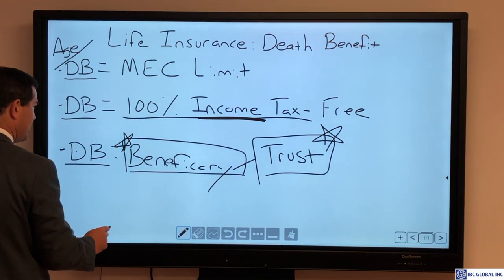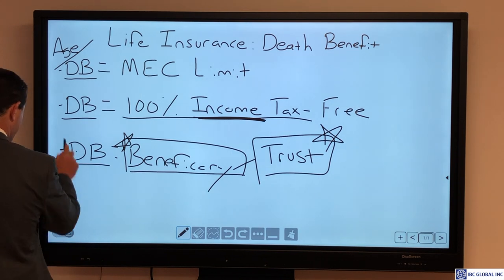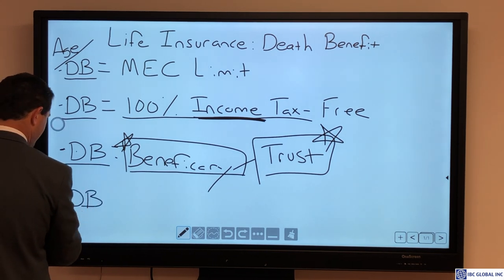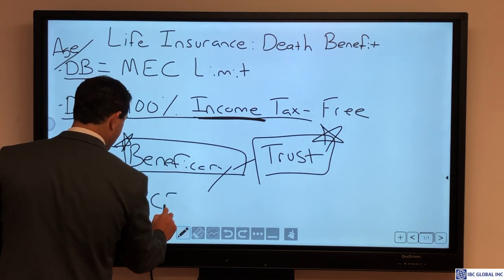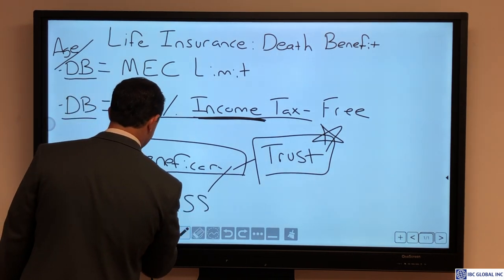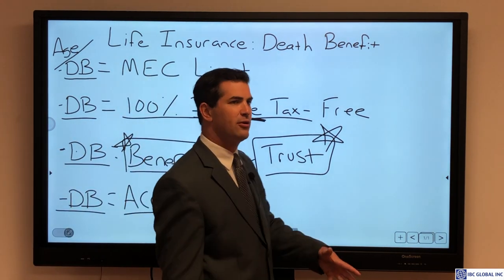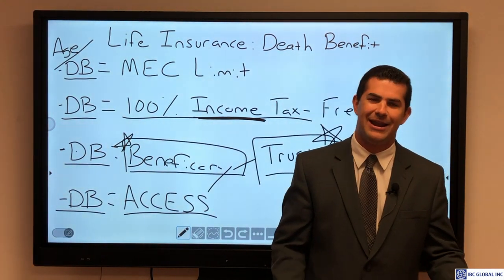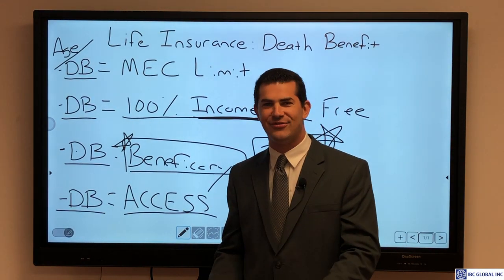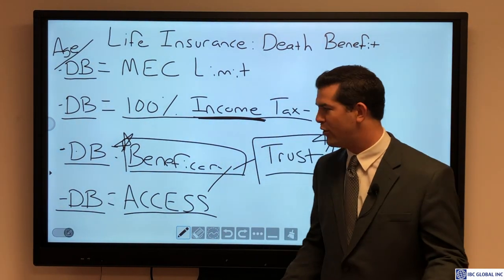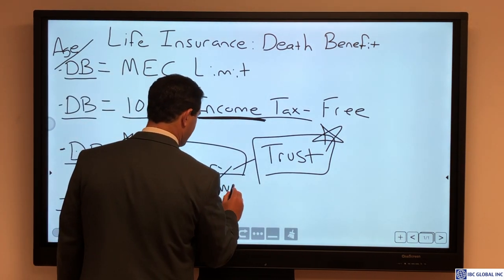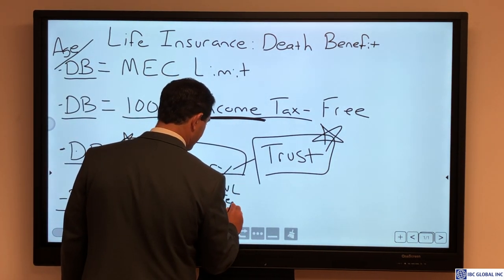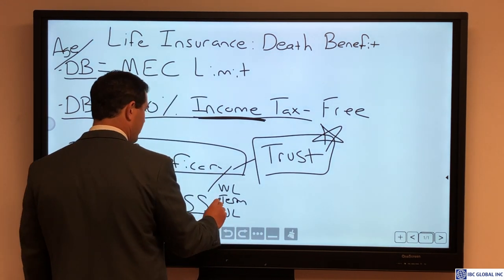When it comes to the death benefit, I do have some access to it — but I cannot simply dip into my $10 million death benefit to go buy a Ferrari. The cash value is what I have access to on a whole life insurance policy. But with most life insurance policies, whether that's whole life, term, universal life, IUL, or VUL, I will have access to the death benefit for certain specific reasons.